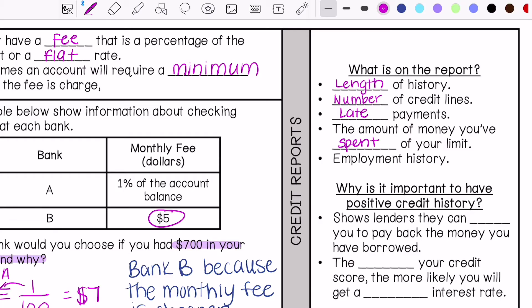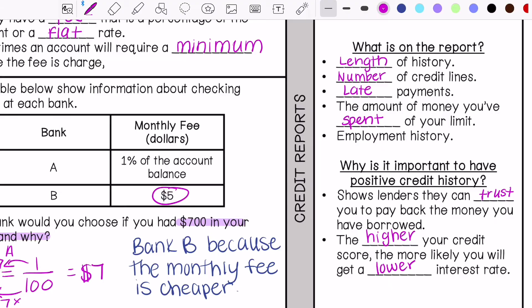Why is it important to have a positive credit history? It can show lenders, people that are giving you money, that they can trust you to pay it back if you borrow money from them. The higher your credit score, the more likely you will get a lower interest rate. That means they can trust you to pay it back, so they are not going to give you a high interest rate. If they can't trust you to pay it back, they're going to give you a high interest rate because that means they can make a lot of money off of you.